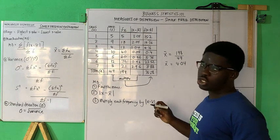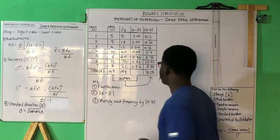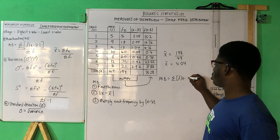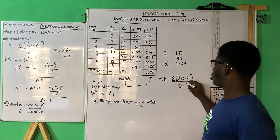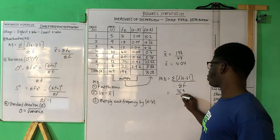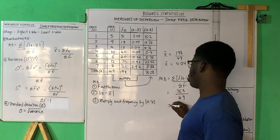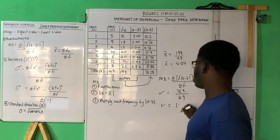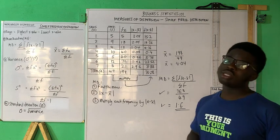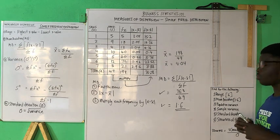Finally, to obtain our mean deviation: sigma f times the absolute difference, which equals 76.28, divided by sigma f, which is 49. Putting this in your calculator and rounding to one decimal place, you should get 1.6. That will be the mean deviation — 1.6 sales. That's how the mean deviation is calculated.